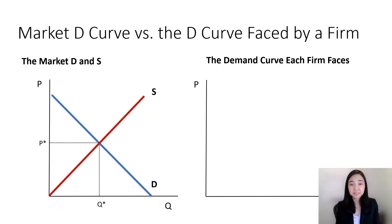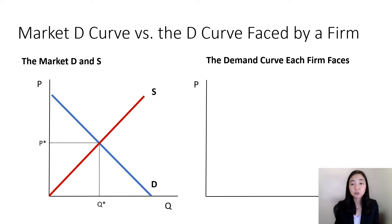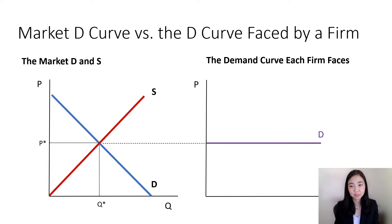Now we're ready to distinguish between the market demand curve and the demand curve that each firm faces. The market demand curve is downward sloping, and at the intersection of the market demand curve and market supply curve, we get the price P-star. This price P-star is determined in the market, and once determined, each firm will just take the price as given and sell their product at price P-star.